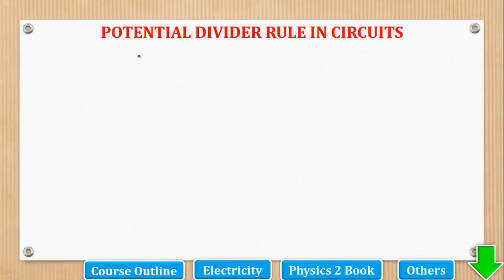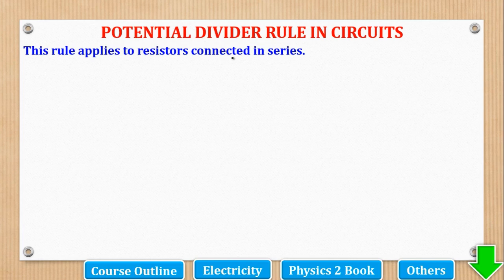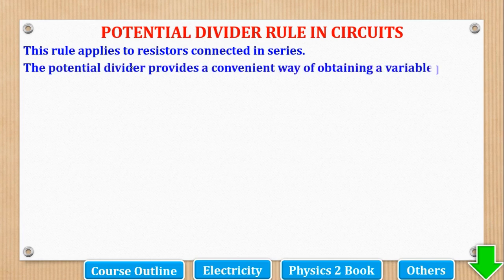Now we shall start our topic of potential divider rule in electrical circuits. This rule applies to resistors connected in series. We know the arrangement of resistors in series, and this rule is used for resistors in series because resistors in series have different PD.